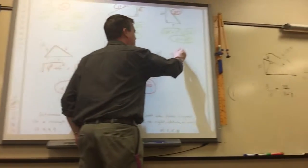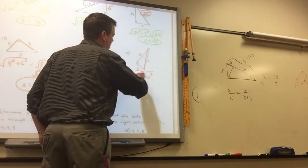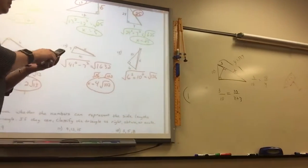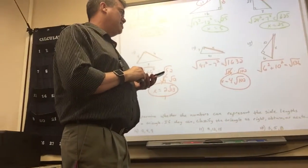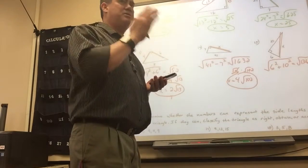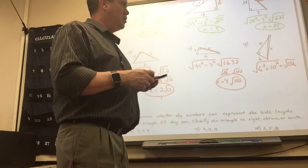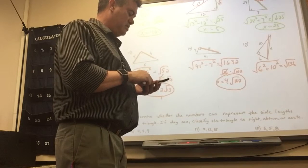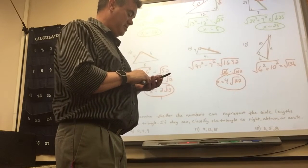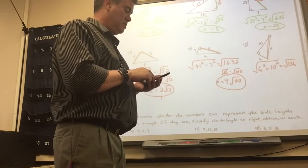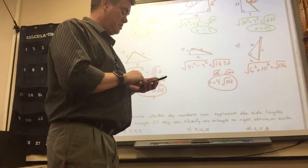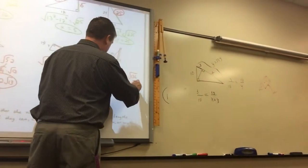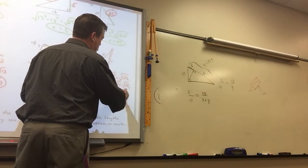Number 15 — looking for the hypotenuse, so square and add, then take the square root. 6 squared plus 10 squared is 136. Start dividing by perfect squares — 64 doesn't go in, 49 doesn't, 36 doesn't, 25 doesn't, 16 doesn't, 9 doesn't, but 4 does. 4 times 34. So that would be 2 square roots of 34.